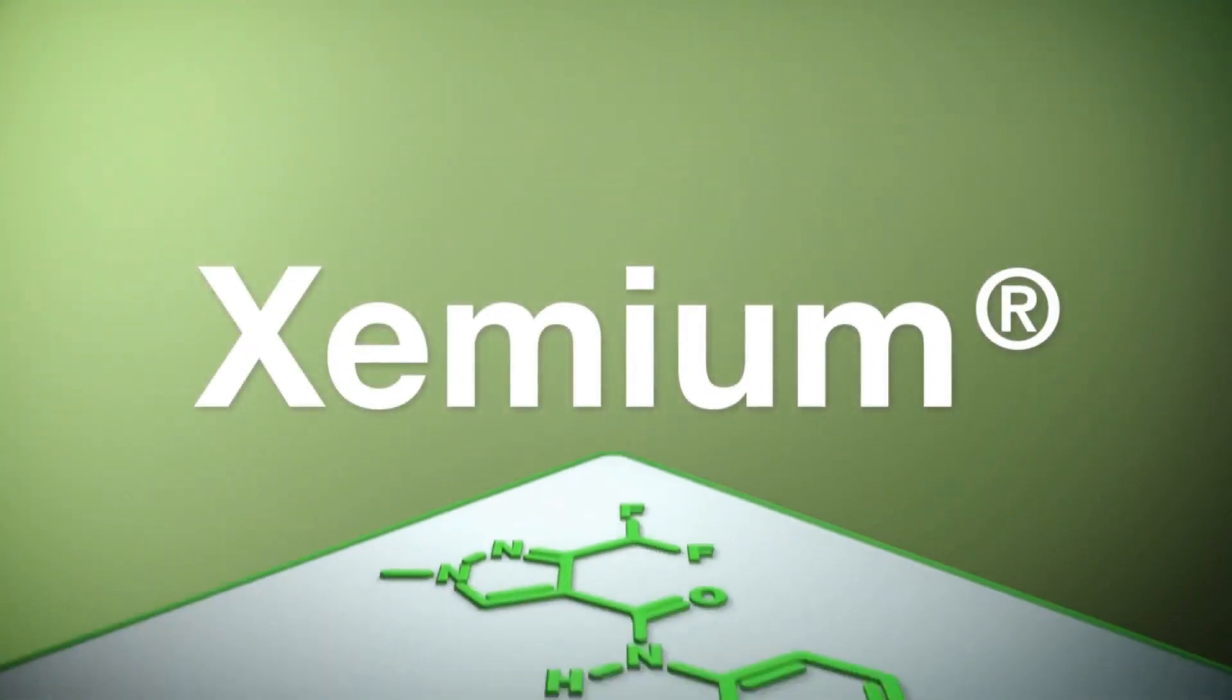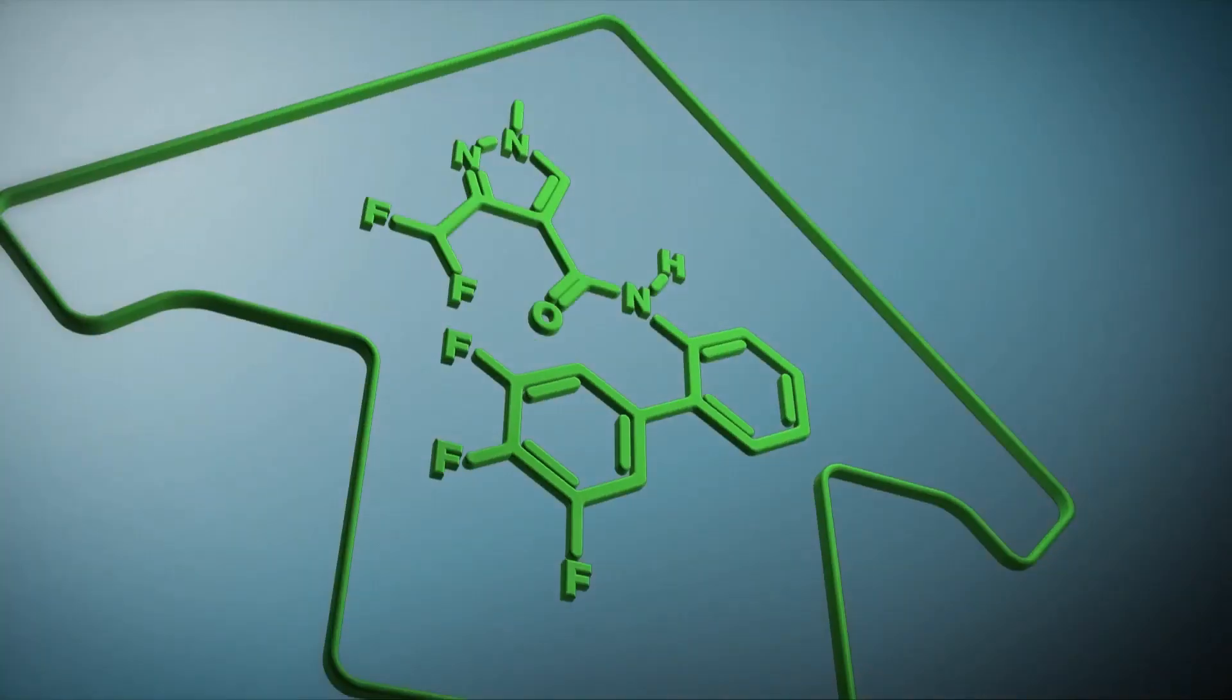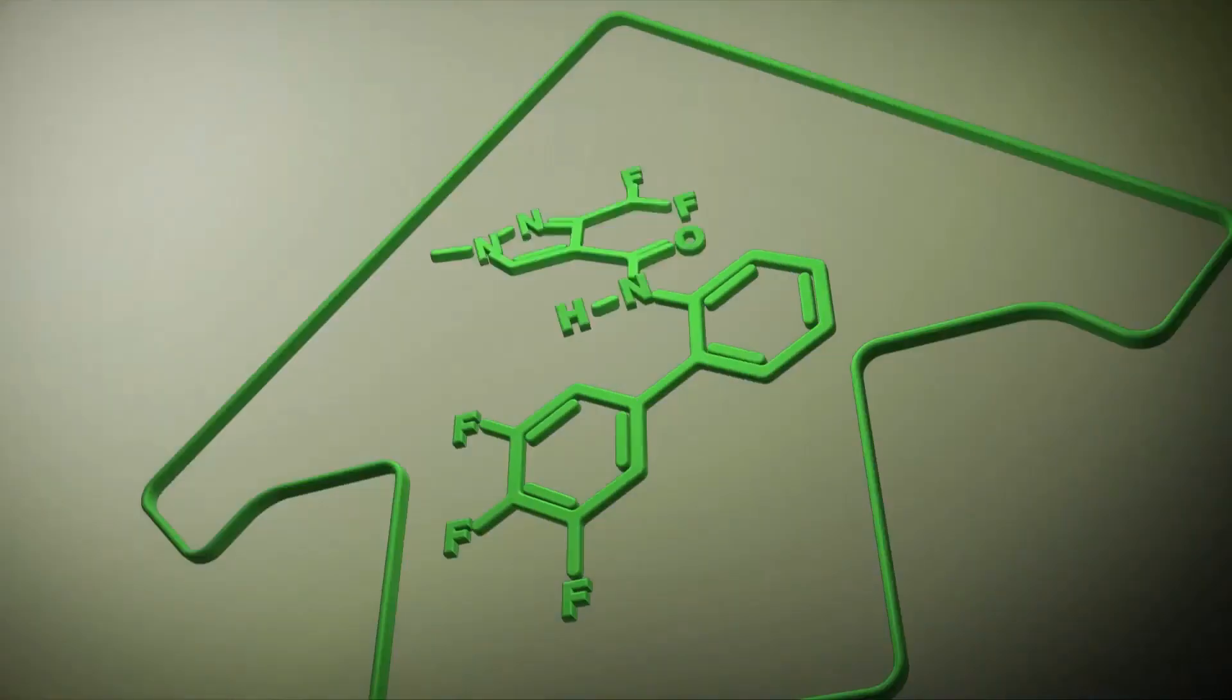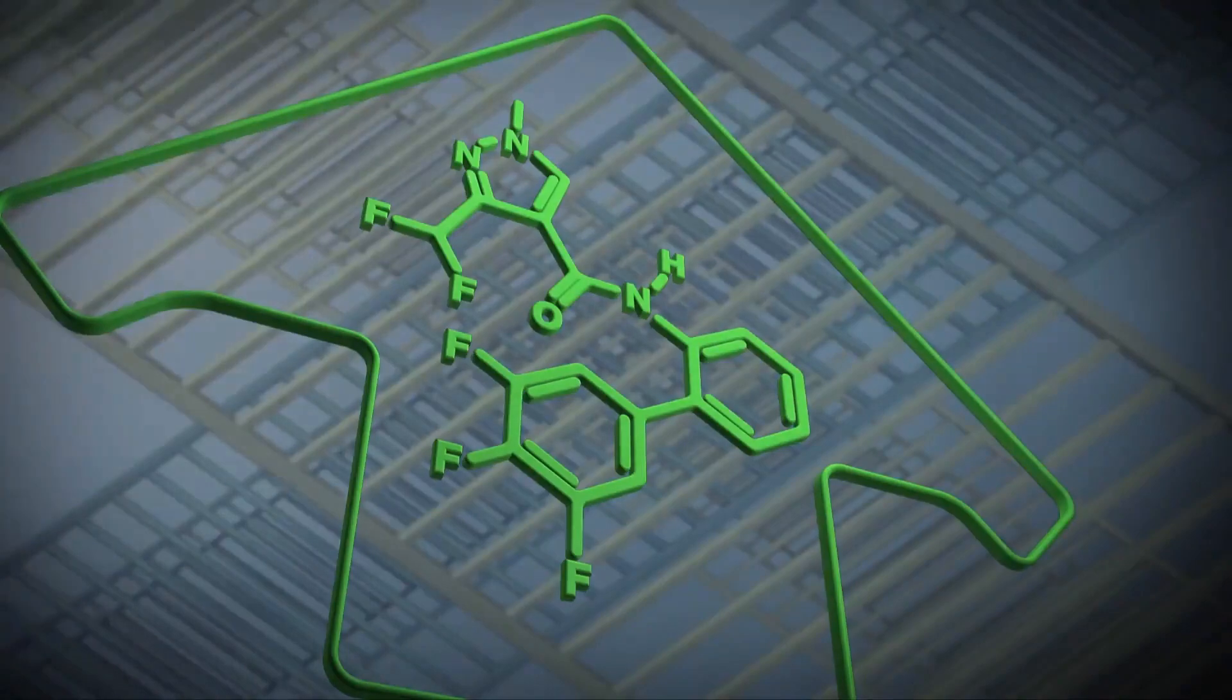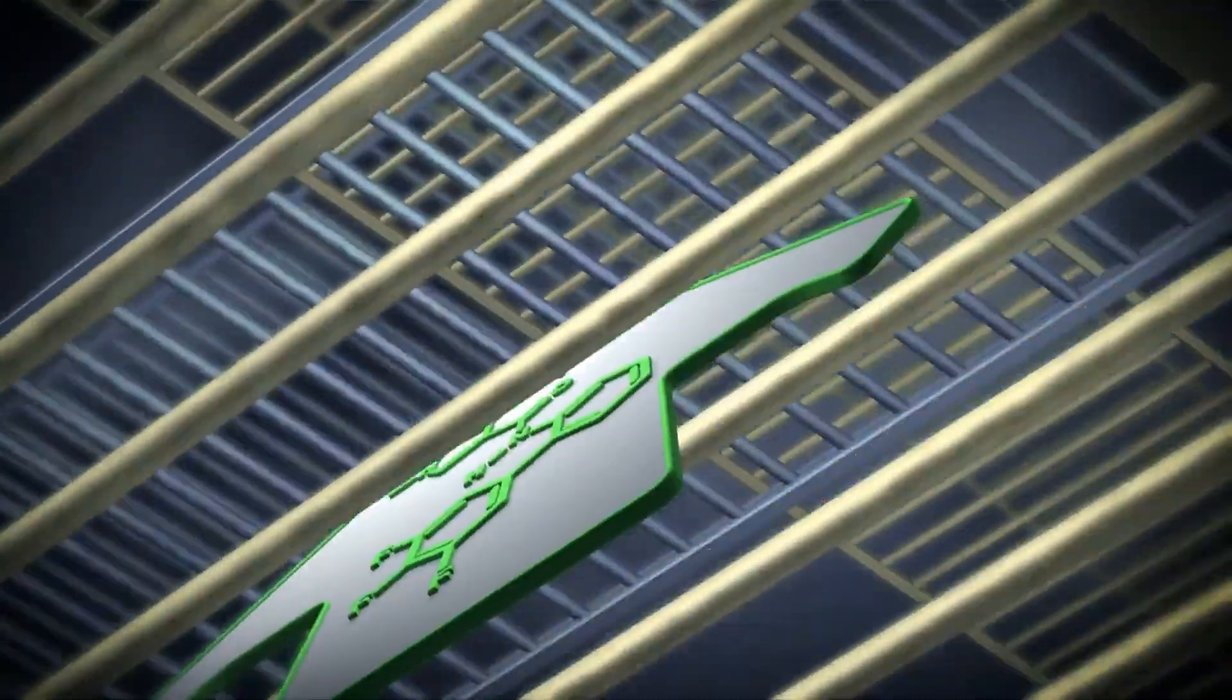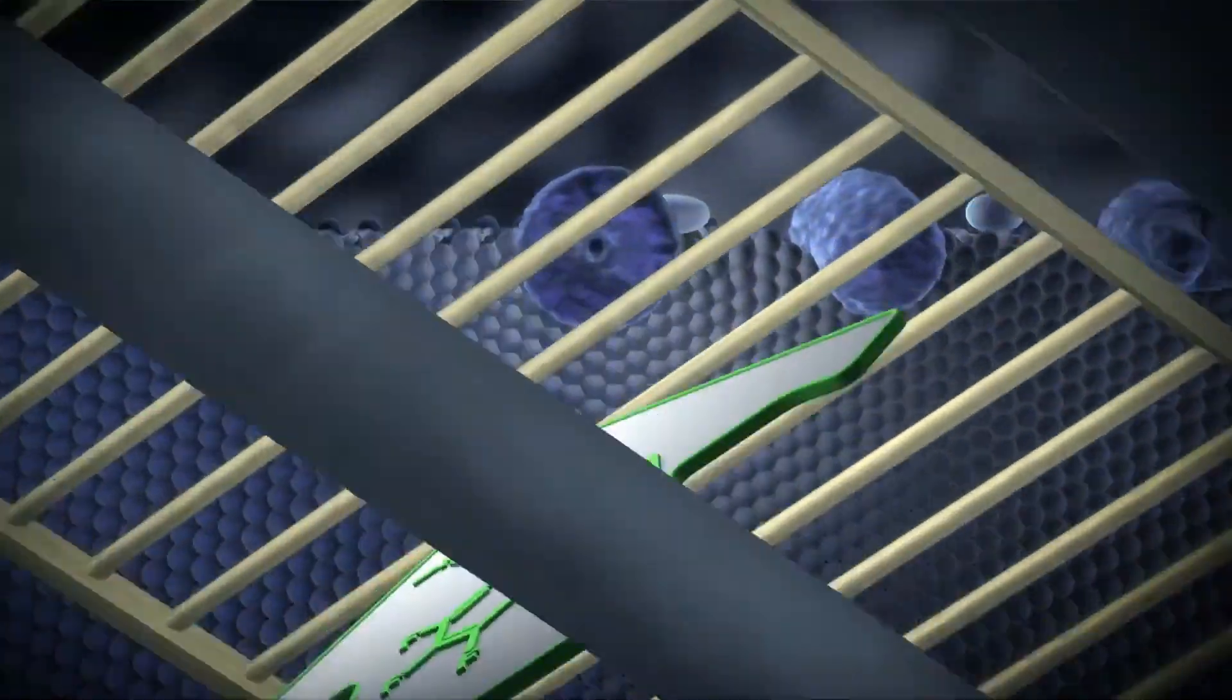The Xemium molecule can assume different conformations, lipophilic or hydrophilic, and is thus mobile in both environments. By switching between the molecular conformations, Xemium rapidly adapts to overcome all membrane barriers on its way to the succinate dehydrogenase target.